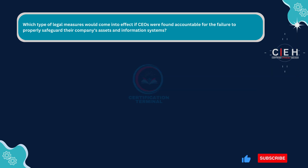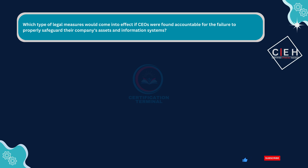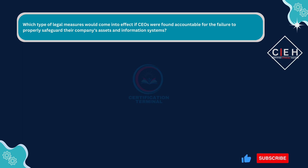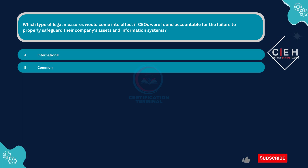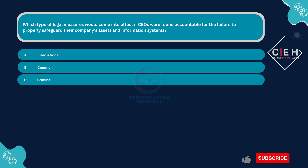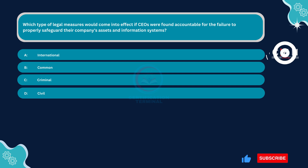Next question. Which type of legal measures would come into effect if CEOs were found accountable for the failure to properly safeguard their company's assets and information systems? Option A: international. Option B: common. Option C: criminal. Option D: civil.